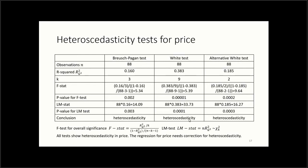The coefficients are jointly significant and the R-squared is high, meaning the independent variables actually explain the squared residuals — that is the case of heteroscedasticity. Since all tests show heteroscedasticity for the price variable, we need to apply corrections.